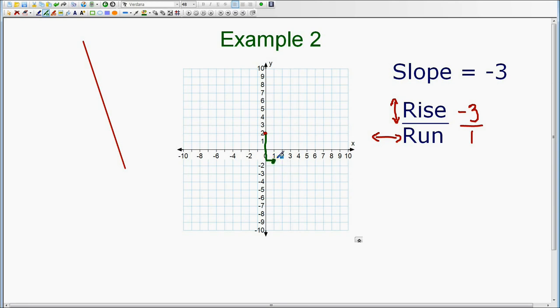From this point, we can continue again. We could rise negative 3, which means to go down 1, 2, 3, and run 1. And this is where we would put our next point.